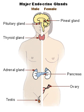The endocrine system is a chemical messenger system consisting of hormones, the group of glands of an organism that secrete those hormones directly into the circulatory system to regulate the function of distant target organs, and the feedback loops which modulate hormone release so that homeostasis is maintained.